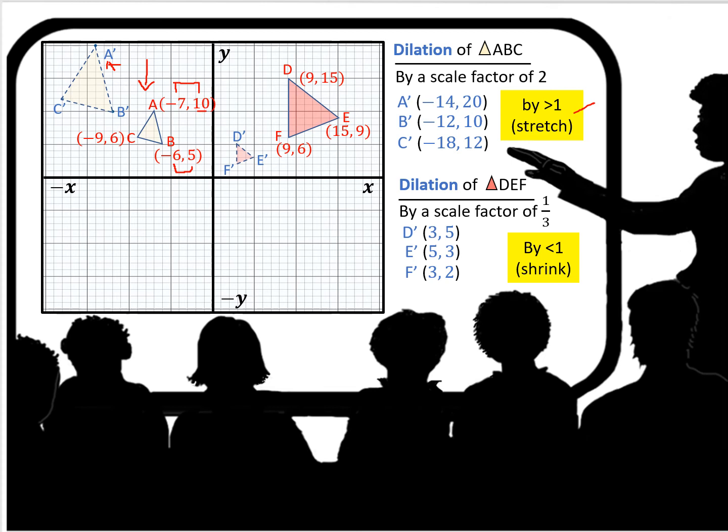B prime would be, our original B is negative 6, so it's going to be negative 12. That's right here, negative 12, and then 5 times 2 is 10. And for C prime, started at negative 9, 6, so it will become negative 18, 12.